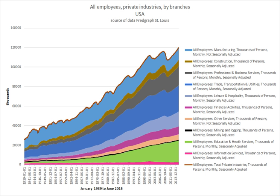In some fields and professions, employees may be eligible for a bonus if they meet certain targets. Some executives and employees may be paid in stocks or stock options, a compensation approach that has the added benefit, from the company's point of view, of helping to align the interests of the compensated individual with the performance of the company.